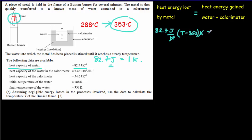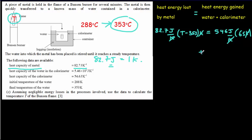On the other side of the equation, we do the same for the water and calorimeter. The water has a heat capacity of 546 joules per Kelvin, and it goes through a temperature change of 65 degrees from 288 to 353. So we put in 65 Kelvin, the Kelvins cancel, and we get joules. A little energy also goes into the calorimeter: 54.6 joules per Kelvin times its 65-degree Kelvin change.